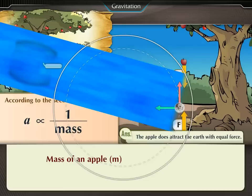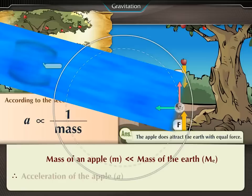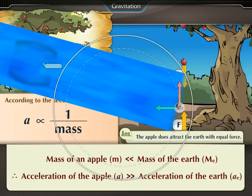The mass of an apple is negligibly small compared to that of the earth. Hence, the acceleration of the apple is very large compared to that produced in earth. So, we do not see the earth moving towards the apple.